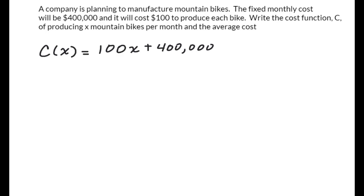Then average cost, where they put the little line over it for average, is how do you find an average? Well, you take the total cost and then divide by the number of bikes.